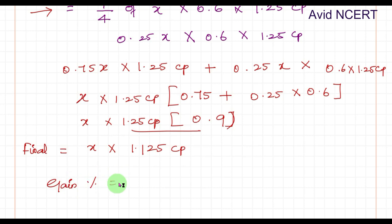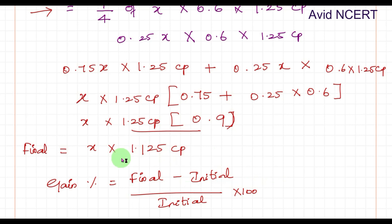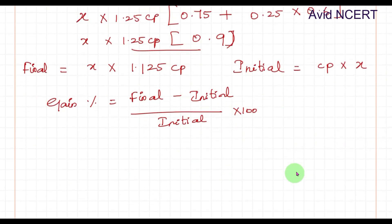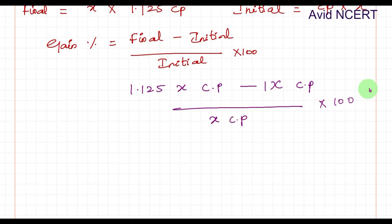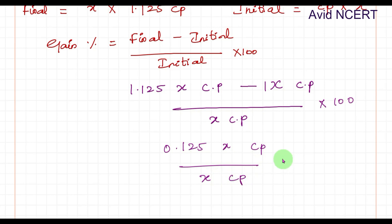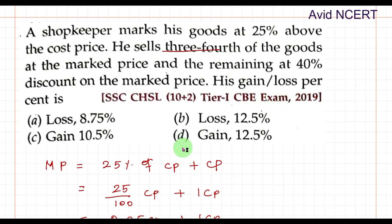To find the gain percentage: (Final Value − Initial Value) / Initial Value × 100. The final value is 1.125x CP and the initial cost is x CP. So: (1.125x CP − x CP) / (x CP) × 100 = 0.125x CP / x CP × 100. The x CP cancels, giving 0.125 × 100 = 12.5%. Since the final value is more than the initial price, this is a gain. The answer is a gain of 12.5%.